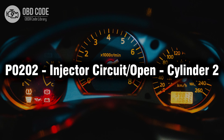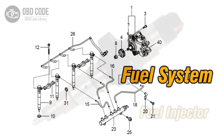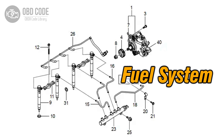Welcome. In this video we will talk about code P0202, its symptoms, causes and possible solutions. The P0202 trouble code indicates an open electrical circuit in the fuel injector for cylinder 2. This code typically points to issues related to the fuel injector circuit for the second cylinder, leading to an open circuit and potential fuel delivery problems.